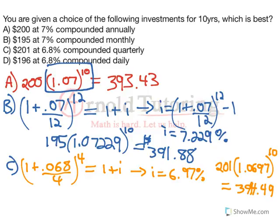OK, so this is our new winner so far. One more to go. Let's do it in green. 1 plus .068. This is a daily rate. So we're going to divide by 365, because we want it per day. The 6.8% is annual, but it's compounded daily.